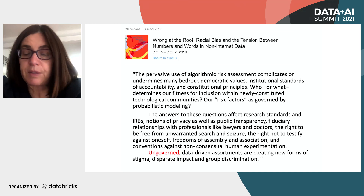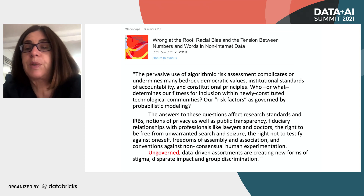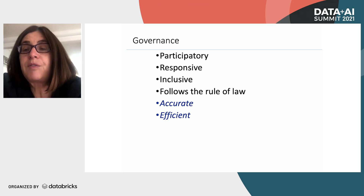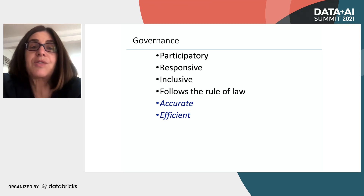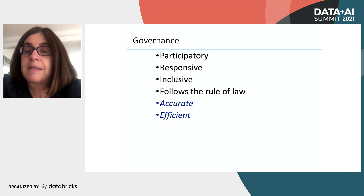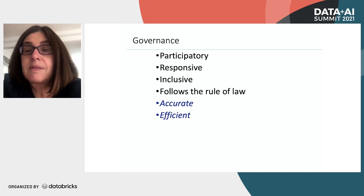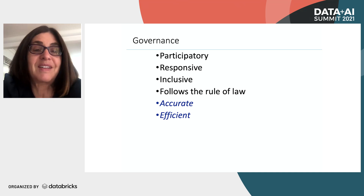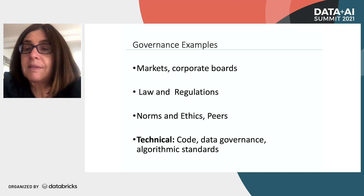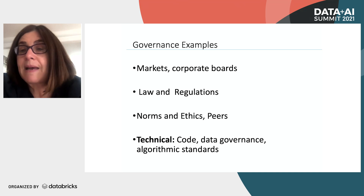What do we mean by governance? If you ask a lawyer, governance should be participatory, responsive, inclusive, follow the rule of law, accurate and efficient. They feel that a risk assessment computer system may be accurate and efficient, but it doesn't supply all those other requirements. Examples of governance include markets, corporate boards, law and regulation, norms and ethics enforced by peers, and technical types of governance such as code standards applied to algorithms.